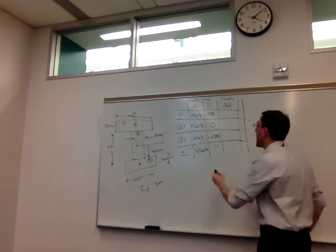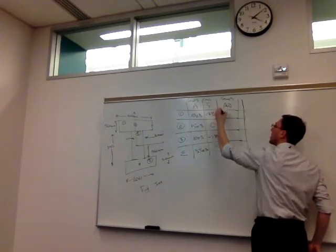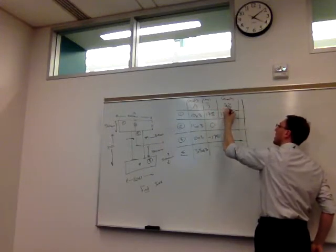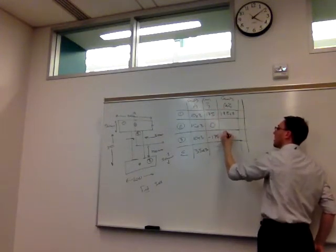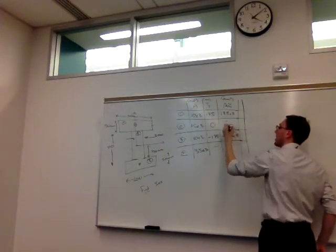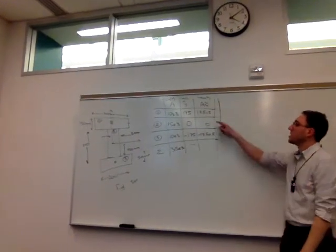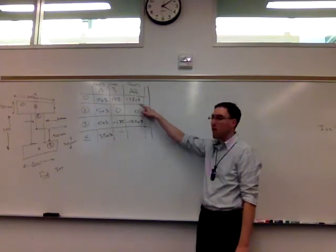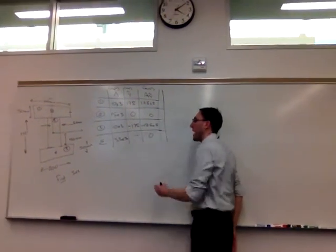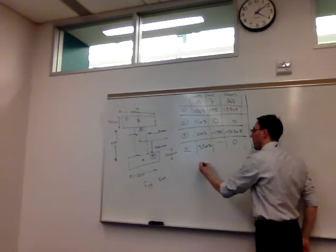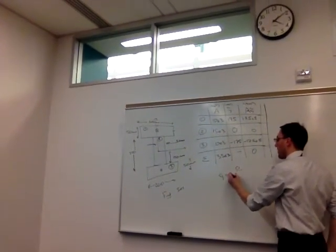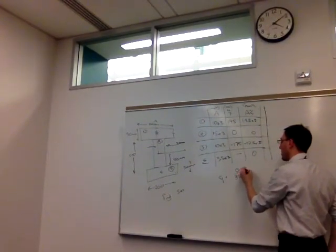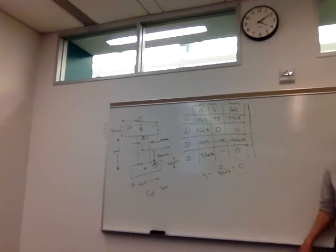I just have to multiply across now. So 17.5 times 10 to the fifth, negative 17.5 times 10 to the fifth, and zero. When I add this together, it adds to zero. I get my y bar by taking zero over 35 times 10 to the third, and as expected, y bar is zero.